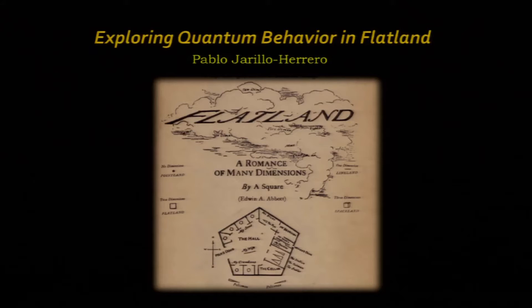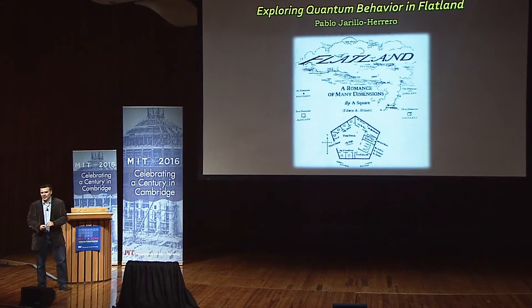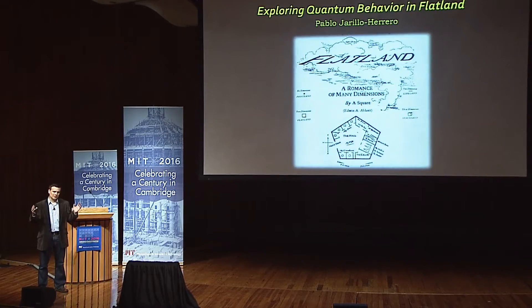Hello, everyone. In the late 19th century, Edwin Abbott wrote a story about Flatland — a land where inhabitants are lines and polygons that live in two-dimensional space. The protagonist is A-square, and he gets a chance to actually get out and visit Spaceland, which is the three-dimensional world.